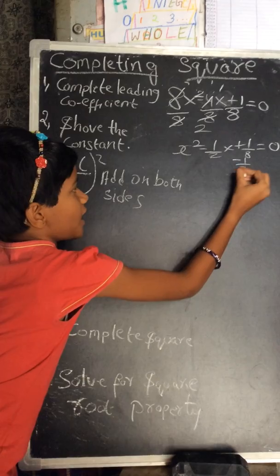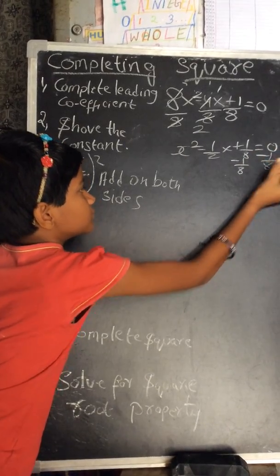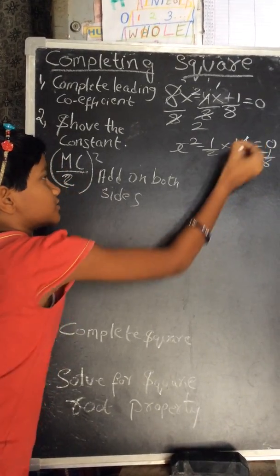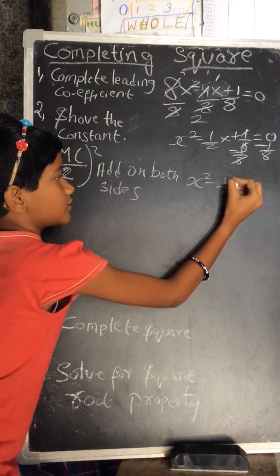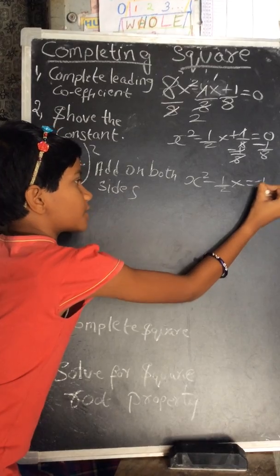Move minus 1 by 8 to the right side. So x squared minus 1 by 2x equals minus 1 by 8.